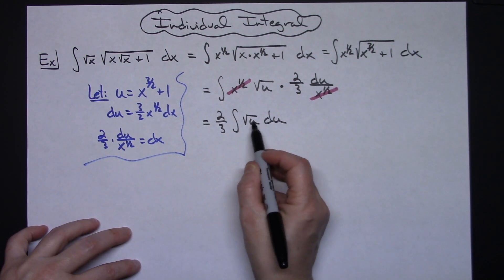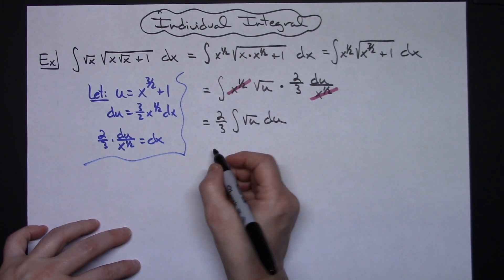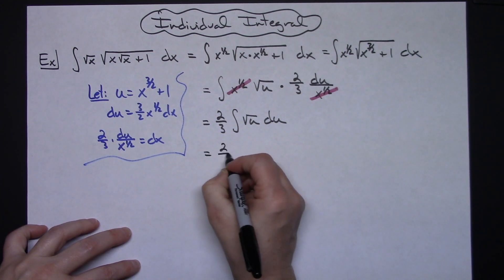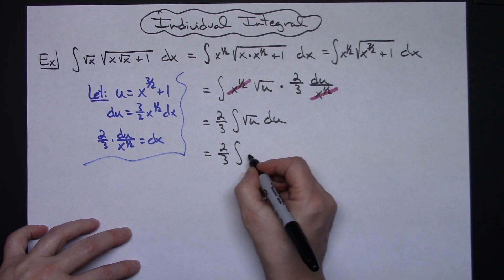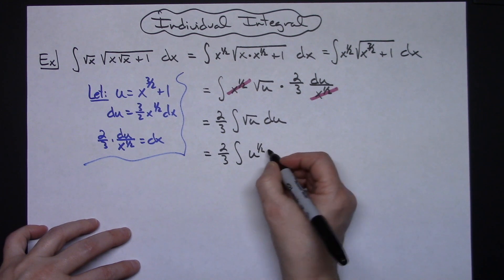Once I turn that into an exponent it's going to integrate very easily. So I'll have a 2 thirds integral of x to the 1 half du.